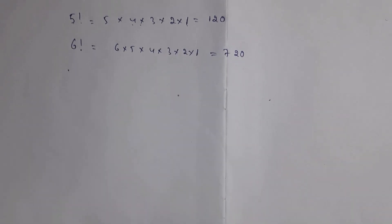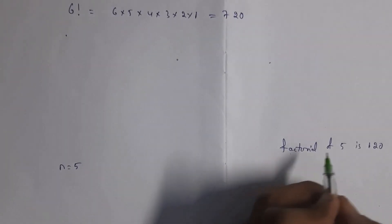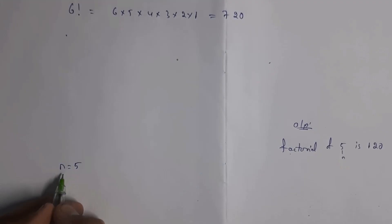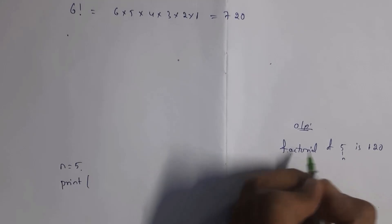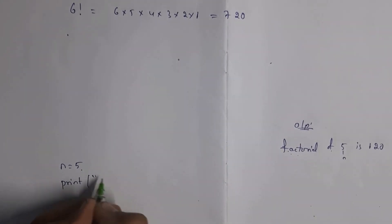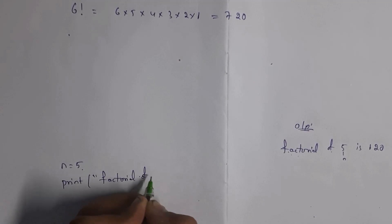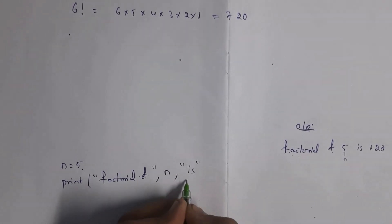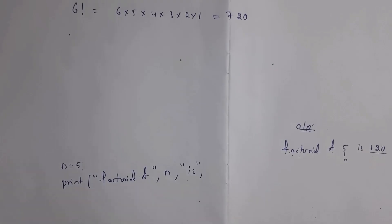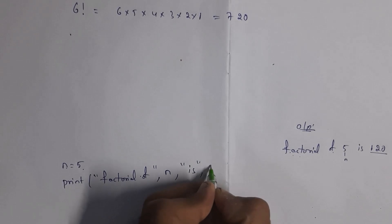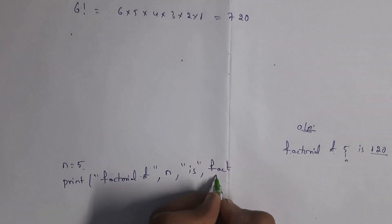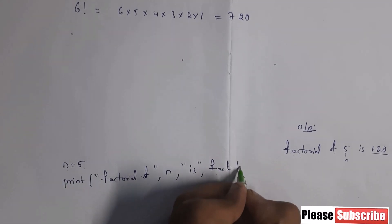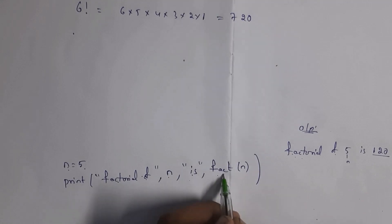Now I want to find the factorial using a Python program. For example, to find the factorial of five, I write n = 5. I want the output to look like: 'factorial of 5 is 120'. Here 'factorial of' is a string so write it in double quotations, then comma n, then comma 'is' in double quotations, then comma the result. To get the result I will write it inside a function — let the function name be 'fact' since I want to find factorial. I want to find the factorial of n, so I pass n.